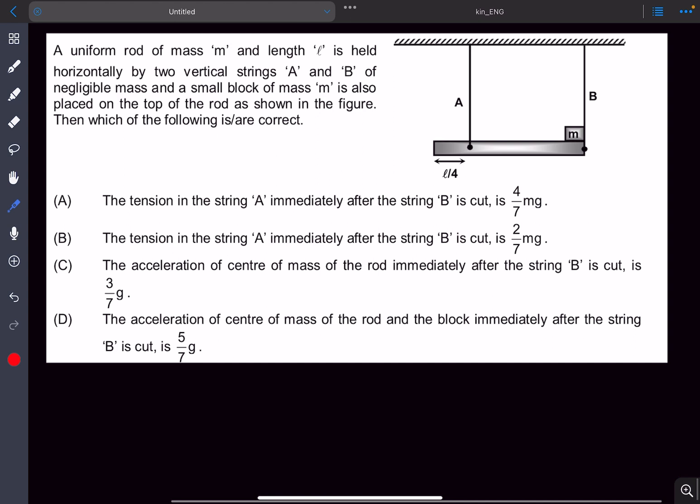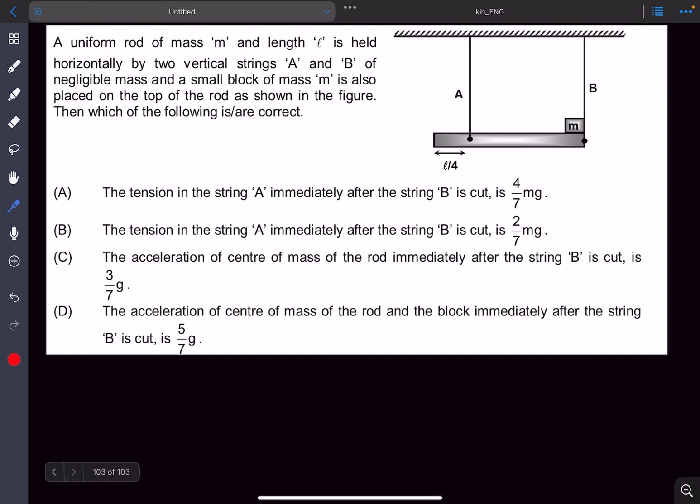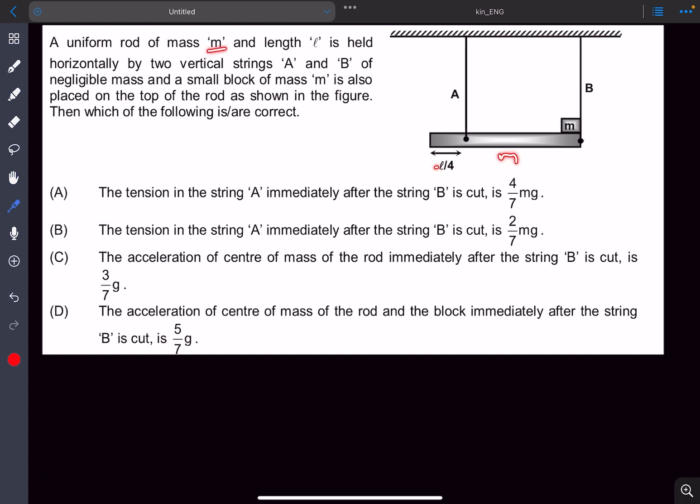So let's begin with the solution. We have been given a uniform rod whose mass is M and length is L, and it is held horizontally by two vertical strings A and B. The string B is now cut and then we need to find the tension in the string A.